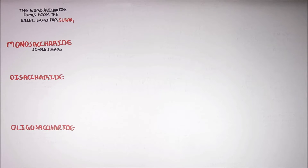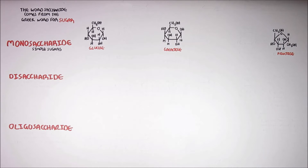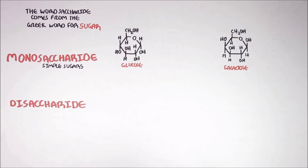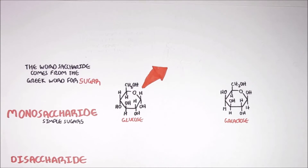The three main monosaccharides in the human diet include glucose, galactose and fructose. Now these structures may look intimidating, but all you need to know is that they contain carbons, hydrogens and oxygens. Glucose is the main source of energy for humans. Here you can see glucose in its cyclic chemical form. What's important to know about glucose is that it contains six carbon atoms.